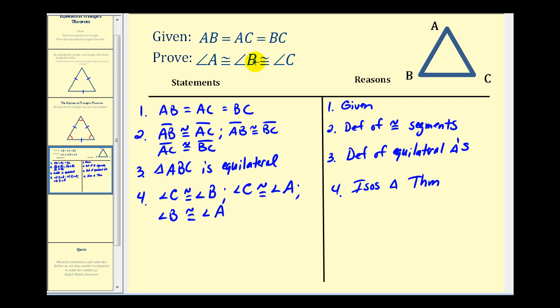Which is what we were trying to prove, but let's go ahead and just state that triangle ABC is equiangular. And this is by definition of an equiangular triangle. And I think we'll go ahead and stop there. I hope you found this helpful.